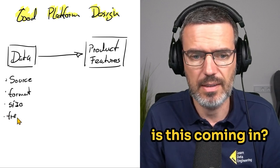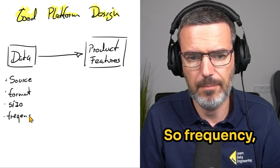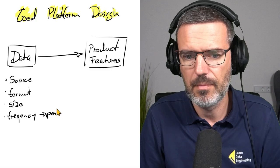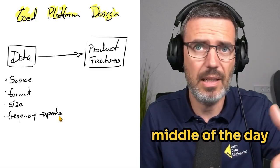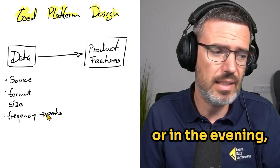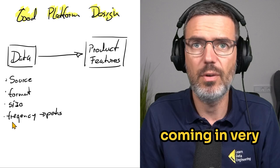Also, how often is this coming in? So, frequency. Look at the frequency. Are there peaks? For instance, in the middle of the day when everybody is on lunch, does this have peaks or in the evening? Or is this data coming in very continuously?